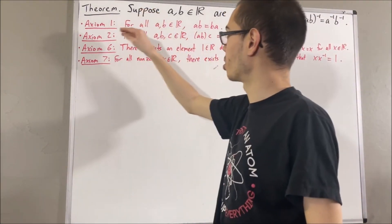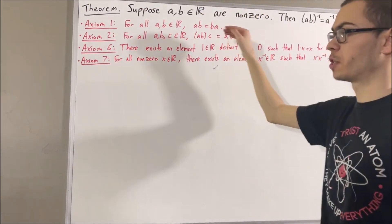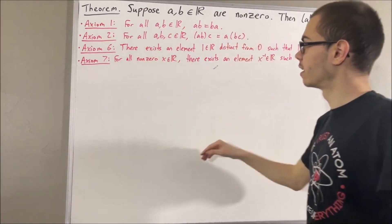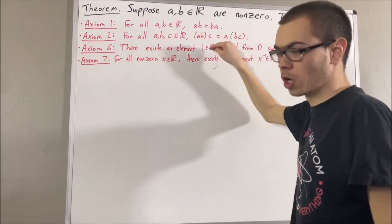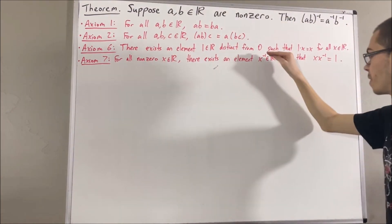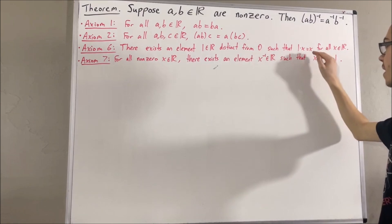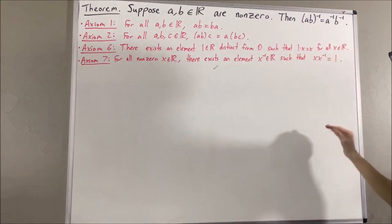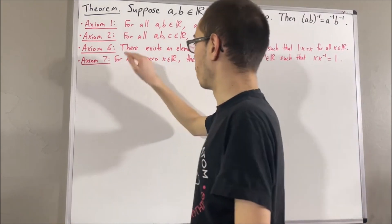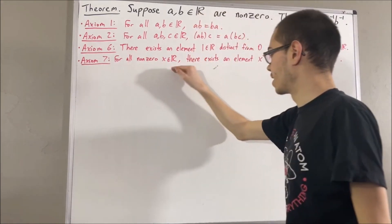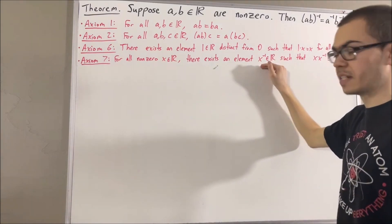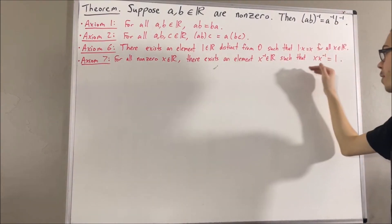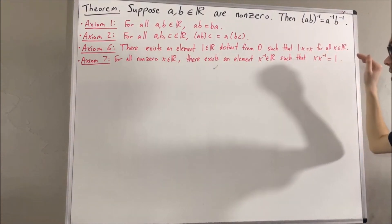Axioms 1 and 2 are just the commutative and associative laws. Axiom 6 tells us that there exists a real number, which we call 1, that is distinct from 0, and has the property that 1 times x is equal to x for all real numbers x. And axiom 7 tells us that for all non-zero real numbers x, there exists a real number, which we call the reciprocal of x, that has the property that x times the reciprocal of x is equal to 1.